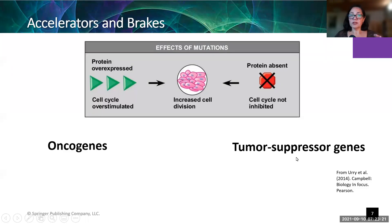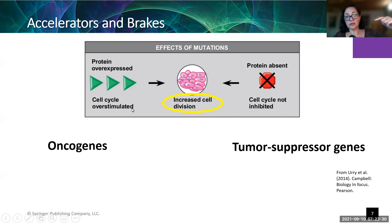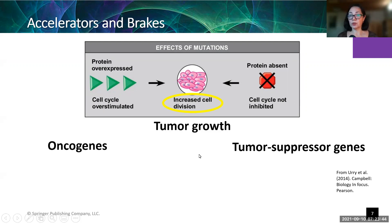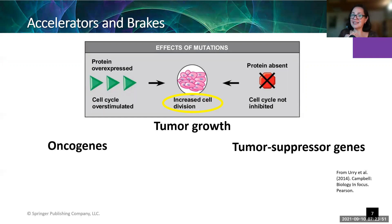The end result of both — overactive oncogenes and absent tumor suppressor proteins — is increased cell division. We need both the signal to over-copy and an absence of tumor suppressor proteins to get tumor growth. If you have both of those things happening, that's where you get a tumor: just a pile of cells that have continued copying themselves.